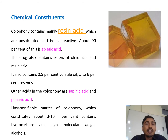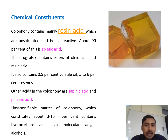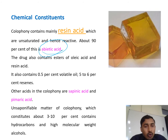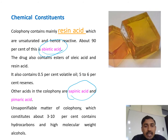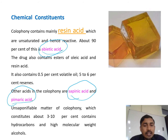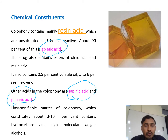Coming to the chemical constituents, colophony contains very important resin acids. The resin acids are unsaturated and very reactive. About 90 percent of abietic acid is present in colophony. You can also see the presence of sapinic acid and pimaric acid. These are certain examples of resin acids which are part of the phytochemicals of colophony.